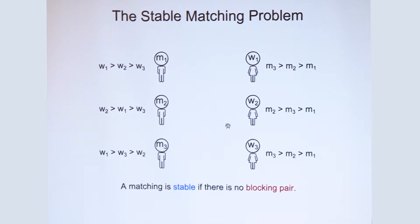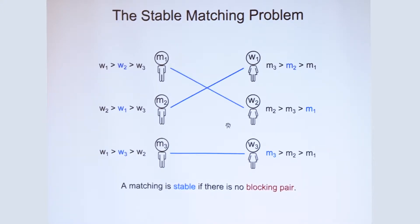And a matching of men and women is said to be stable if there is no blocking pair. So for example, say we have a matching like this. This matching is not stable because there is a pair of agents, M2 and W2, who prefer each other over their assigned partners. Such a pair tends to destabilize the matching, and it's called a blocking pair. And a stable matching is one that does not have any such pair.